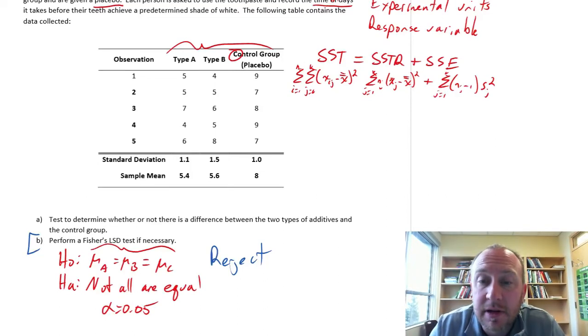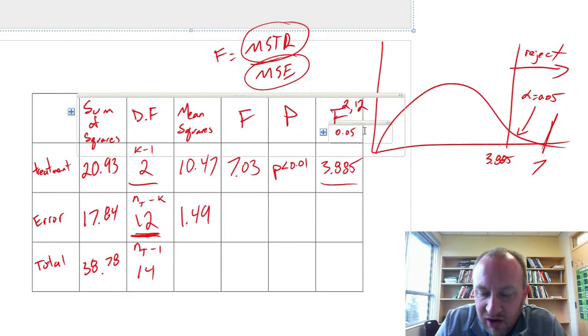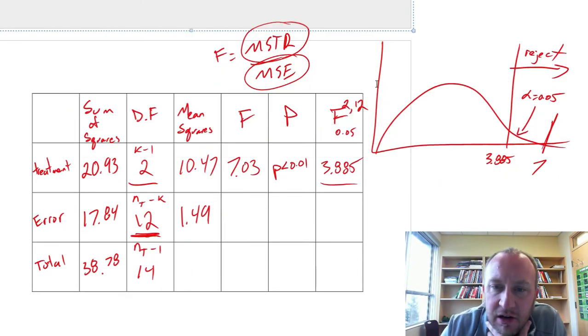Okay, welcome back. Here we're picking up right where we left off on this first ANOVA exercise, where we went through and completed a full ANOVA table and we found that we rejected our null hypotheses.